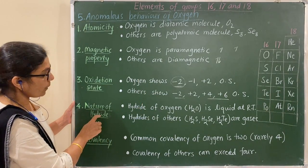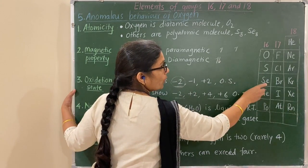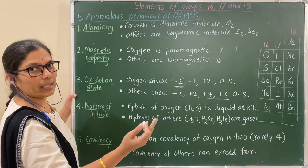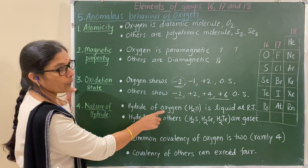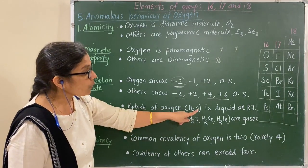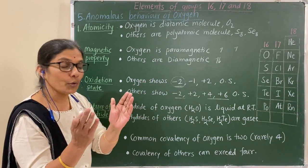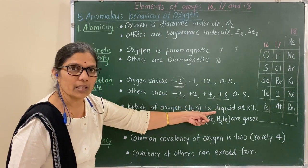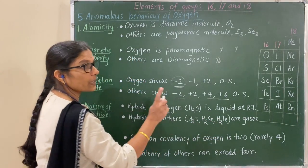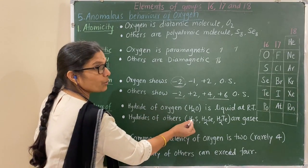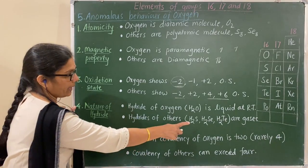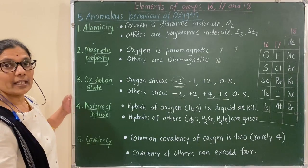Next, the nature of hydrides: hydrides are formed when elements react with hydrogen. The hydride of oxygen is H₂O. H₂O is in a liquid state because oxygen is highly electronegative and therefore forms intermolecular hydrogen bonding between H₂O molecules. While other members' hydrides such as H₂S, H₂Se, H₂Te are in the gaseous state due to absence of hydrogen bonding.